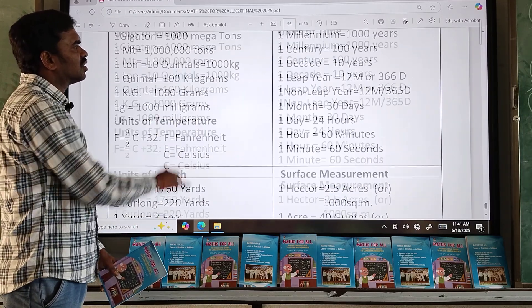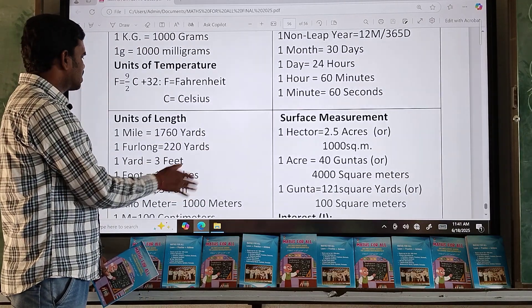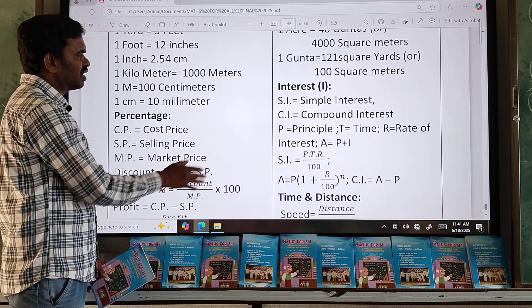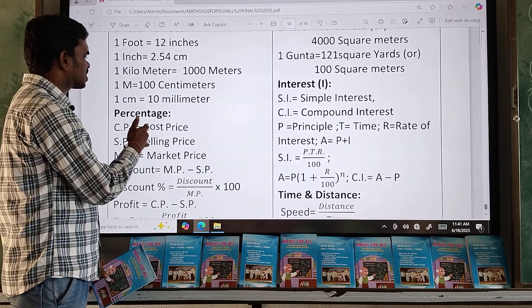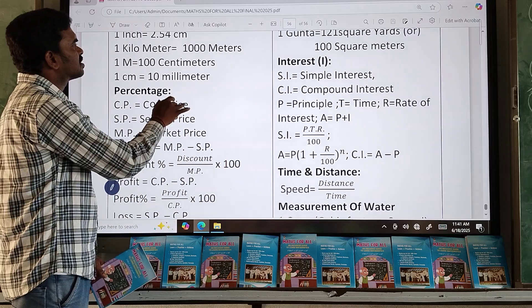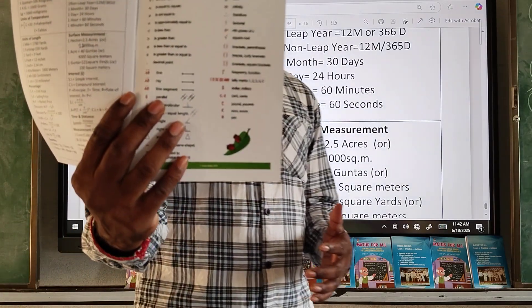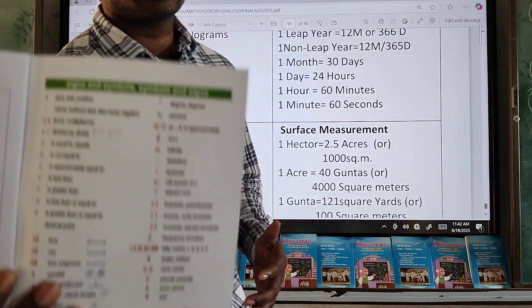Finally, units: units of time, units of weight, units of surface measurements, units of length. Some interest formulas, percentage formulas, time distance formula, measurements of units. And finally, symbols. Symbols are also explained.